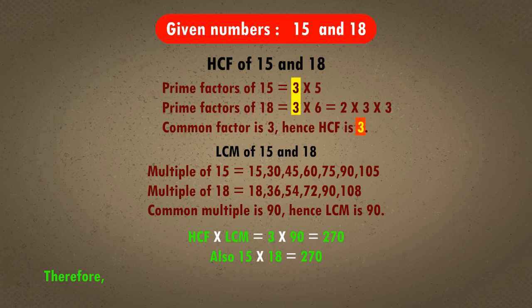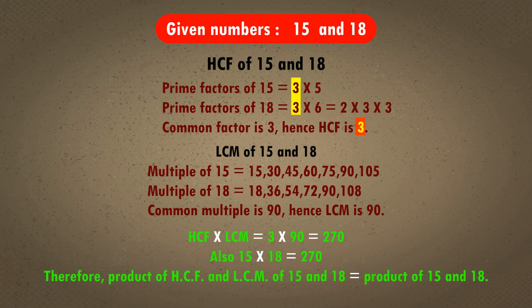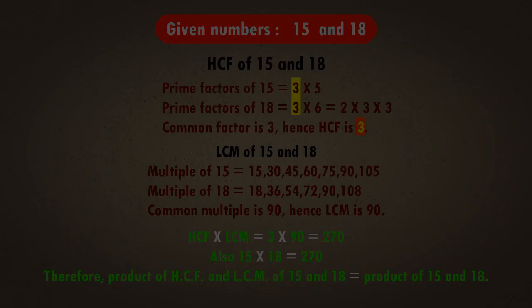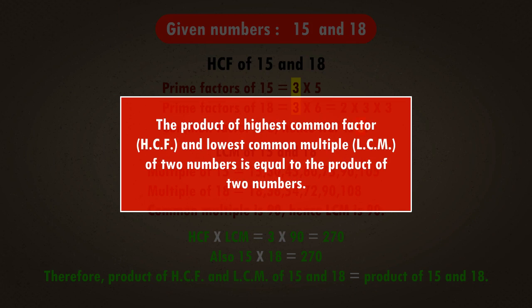Therefore, the product of HCF and LCM of 15 and 18 is equal to the product of 15 and 18. From the above explanation, we conclude that the product of HCF and LCM of two numbers is equal to the product of those two numbers.